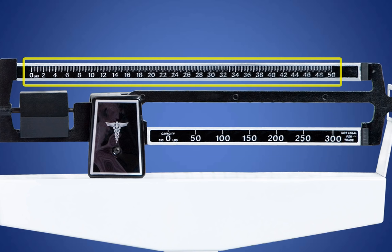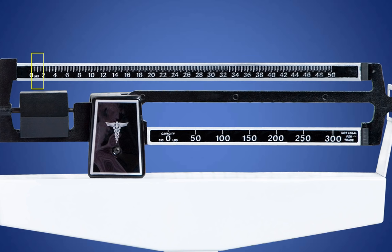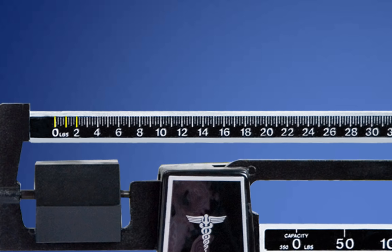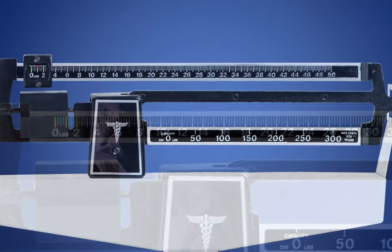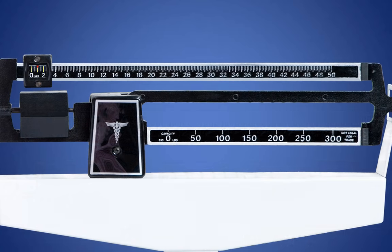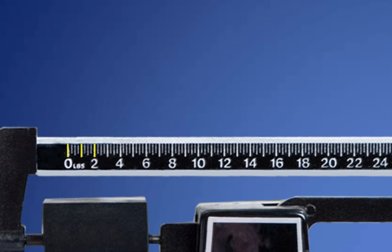The upper bar numbers increase in increments of 2 pounds. However, there are more calibration markings in between each number that must be interpreted correctly. Let's first focus on the sizes of the lines. You have long bold lines and thinner medium and short lines. The long bold lines are whole numbers. This line indicates 0 pounds. This line indicates 1 pound. And this line indicates 2 pounds.